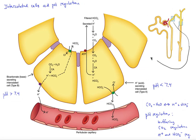In this figure, let's examine the intercalated cells and how they aid in pH regulation. The intercalated cells are found in the late distal convoluted tubule over here, as well as in the early collecting duct over here.